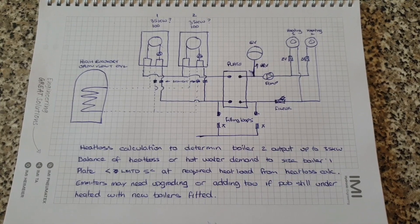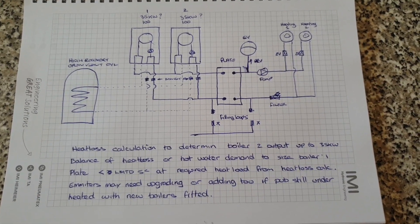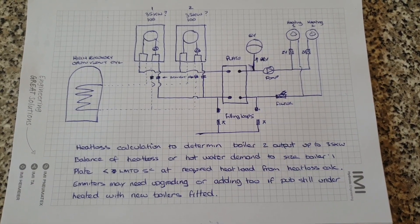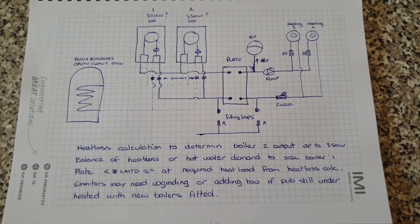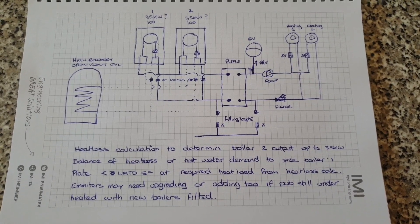So we're not quite sure what the heat loss is yet. We're going to get heating engineer software to calculate the heat loss for the building and that will allow us to establish our boiler sizing. So this is a provisional design based on the idea that the heat load might exceed 35 kilowatts.